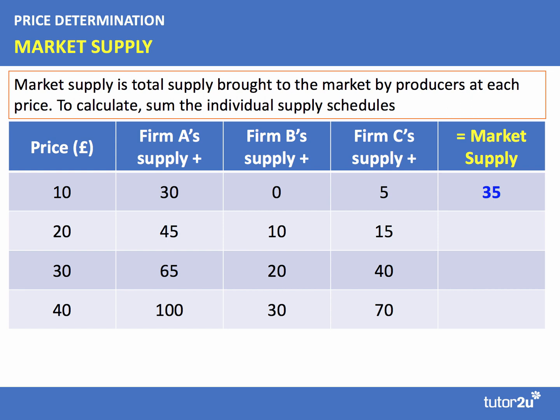When the price doubles to £20, Firm A supplies 45, Firm B comes into the market and supplies 10, and Firm C expands production from 5 to 15. Adding those three numbers together we get 70. We can continue doing this — for example at a price of £40, all three firms are supplying to the market and the total supply is 200. Market supply is the horizontal summation of each individual firm's supply schedules.